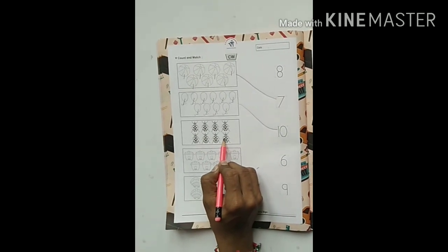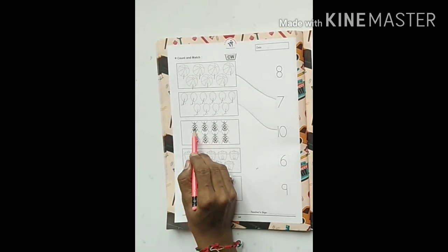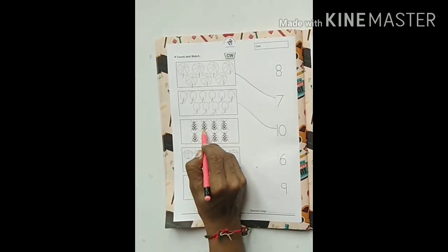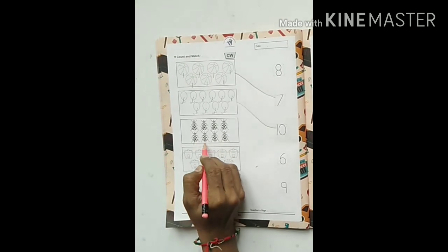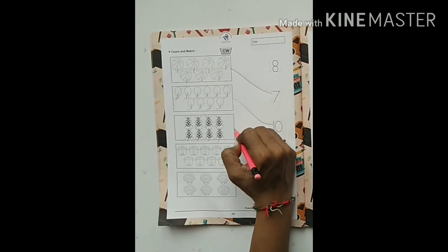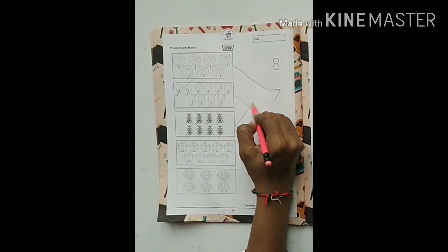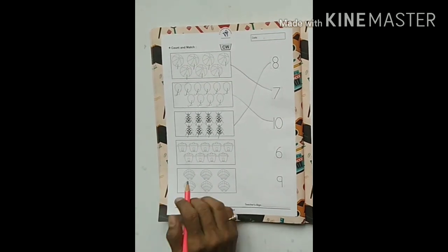Next is house flies. Let's count. 1, 2, 3, 4, 5, 6, 7, 8. Eight house flies. We have to match with the 8th number. Very good.